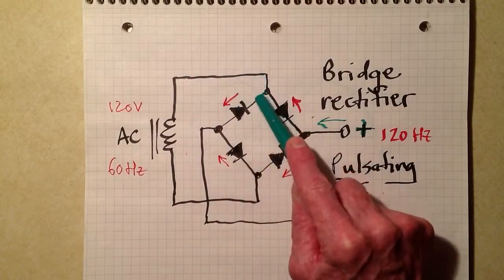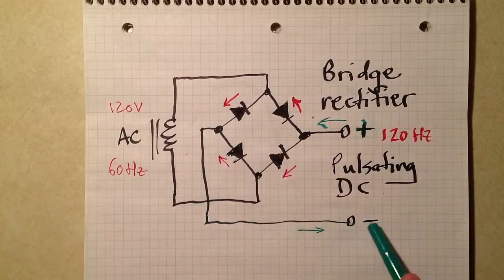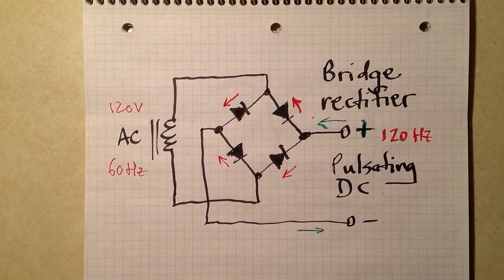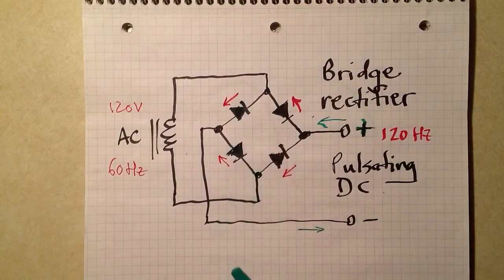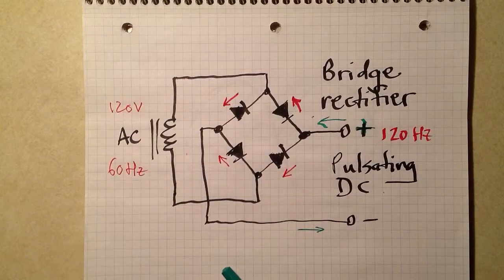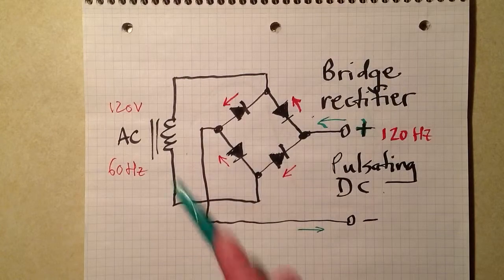Similarly, electrons can flow through either this diode or this diode, and come out of the negative terminal and go into the load. Which of these diodes happens to be doing the work at any given time depends on the part of the cycle that we're talking about.